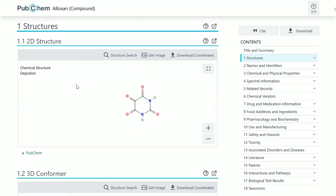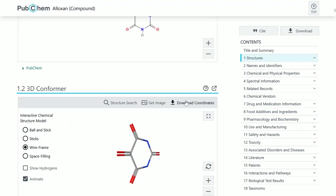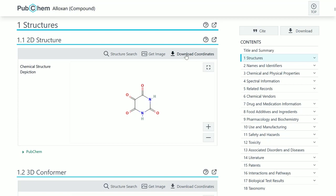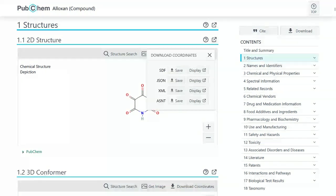Download the structure. To download the structure, look for the download button near the structure image. Click on it and you will typically have options to download the structure in various formats such as SDF, SMILES, or even as an image file like PNG or SVG.